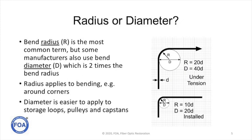While most people refer to bend radius, some people also refer to bend diameter. Bend radius is the most common term, but some manufacturers are starting to use diameter. An easier way to not get confused is to think of it this way: bend radius applies to bending around corners, while diameter is easier to think of if you're running the cable over a pulley or a capstan, or rolling the cable up for storage loops. So radius applies to bending around corners, and diameter refers to storage loops, pulleys, and capstans.